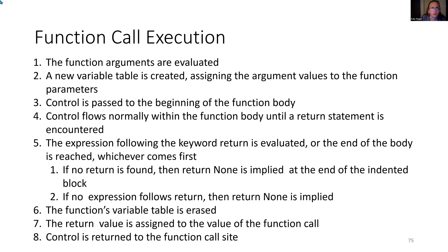Let's see what the order is. First, the function arguments will be evaluated — they may need to be put into canonical form because they may not be reduced. So if you have 2 plus 2, it's going to need to be resolved to 4. Second, a new variable table is created, assigning the argument values to the function parameters. The function call involves variable assignment to the parameters, which opens up the variable table and those new ones will be entered in their new scope — the local scope of that function, because all parameters are local variables.